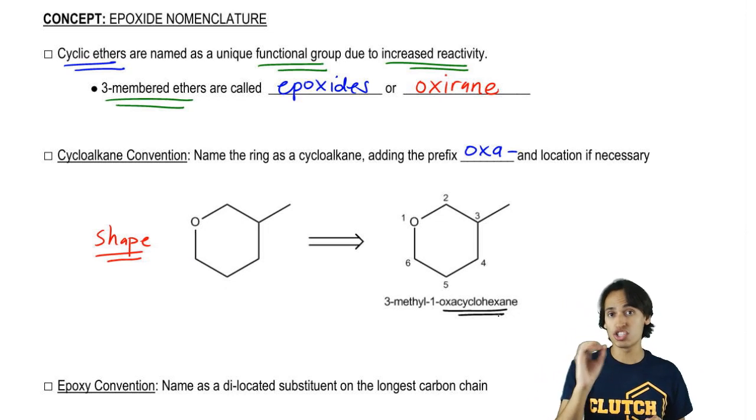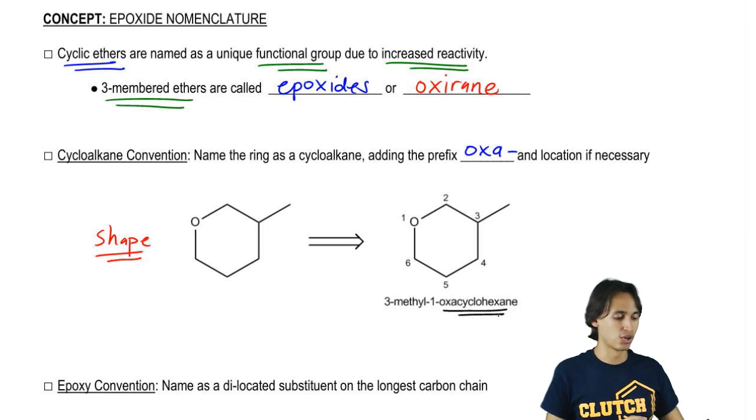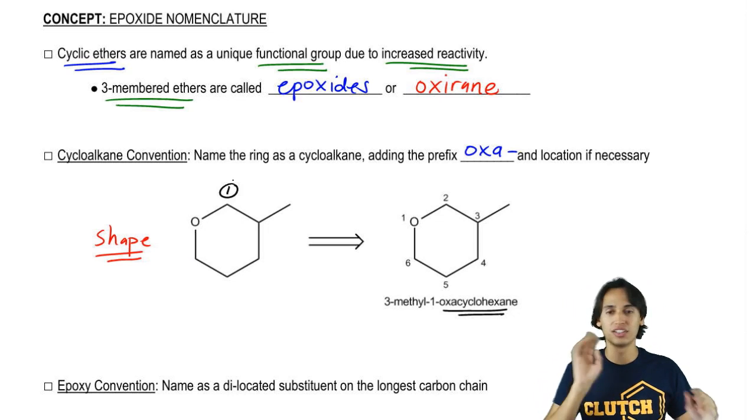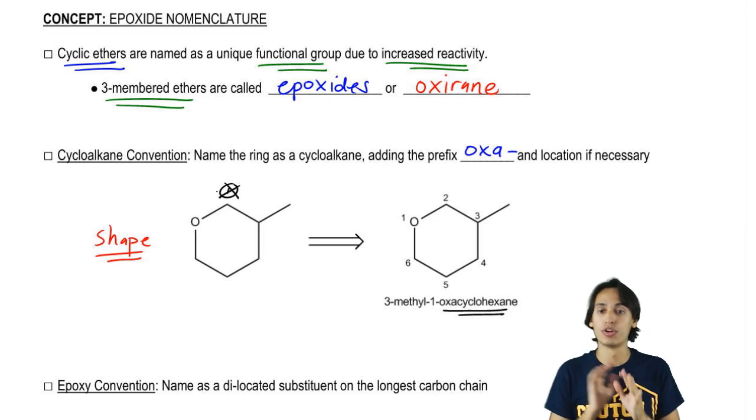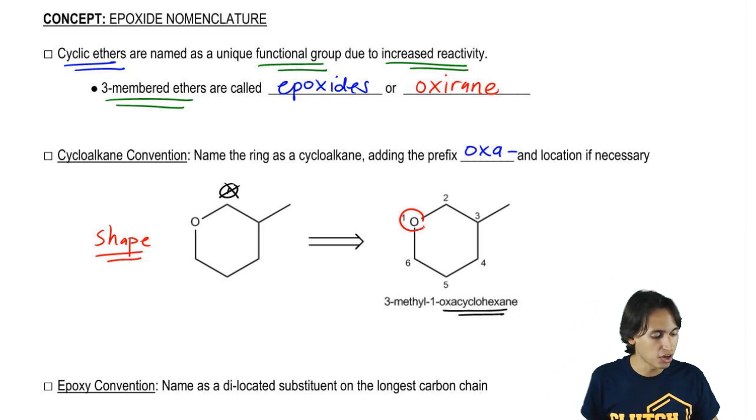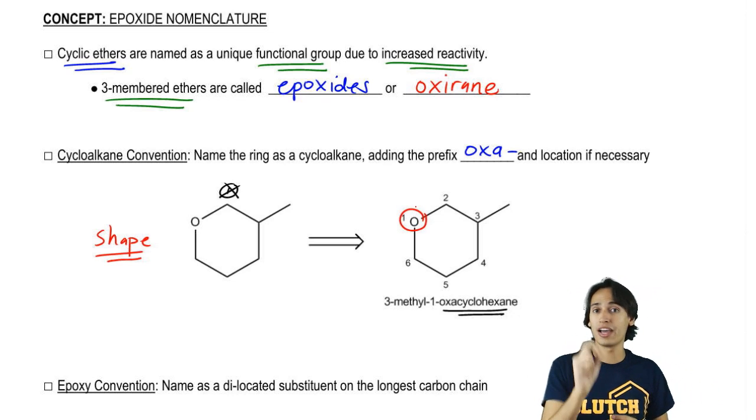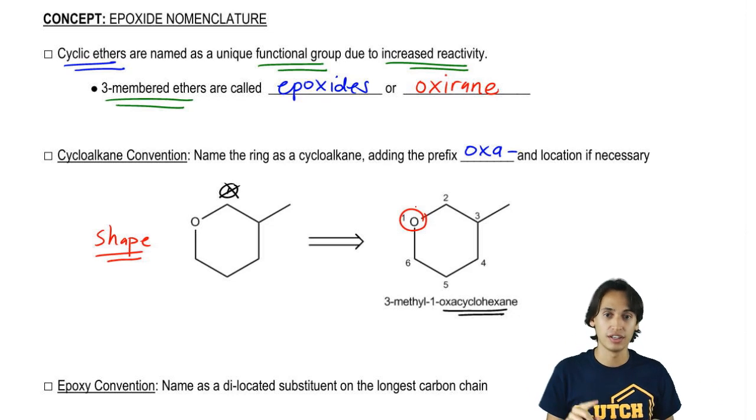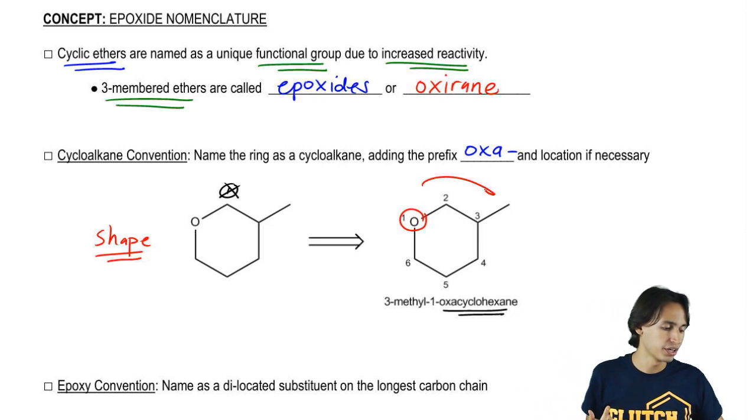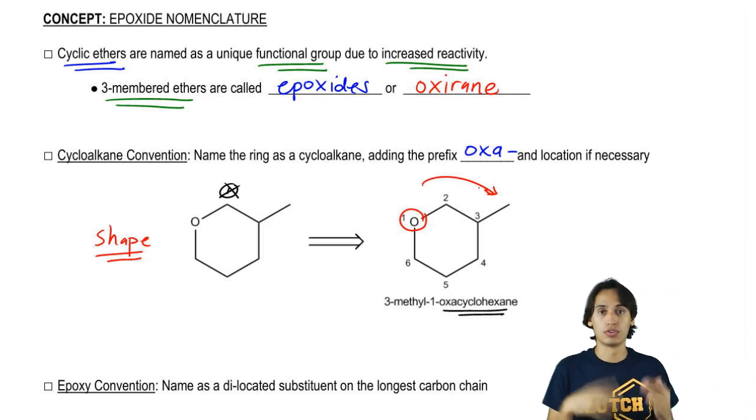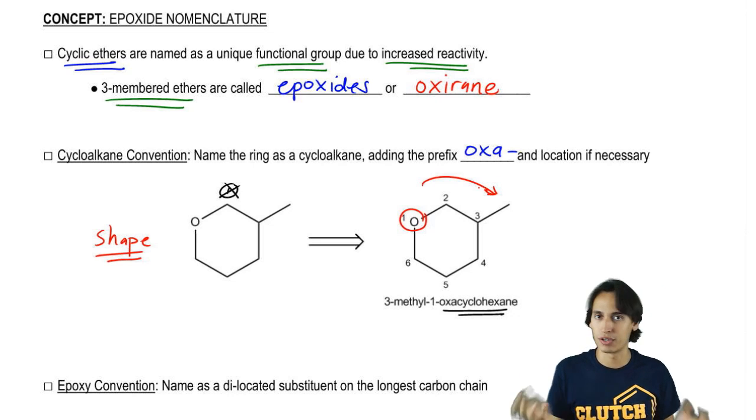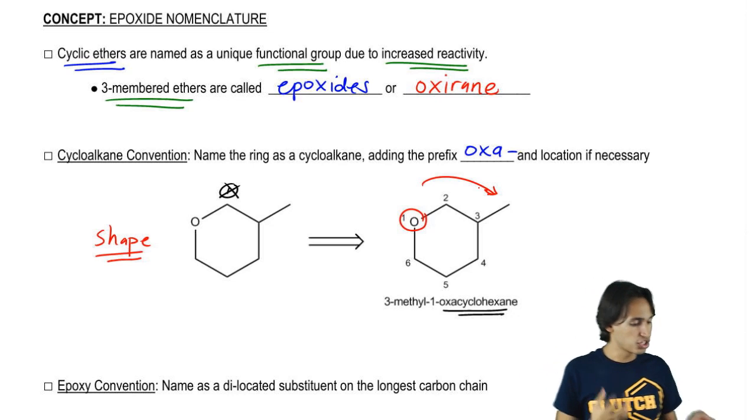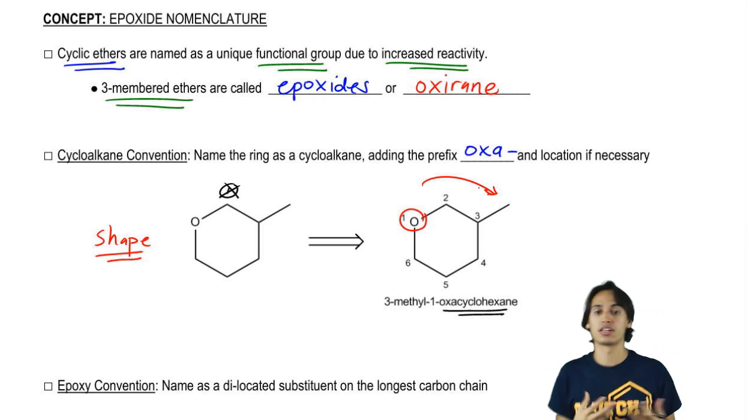So let's go ahead and just talk about this for a second. The root is going to be the oxacyclohexane. Now we just have to talk about locations. It turns out that the oxygen is always going to get your one spot. So when I put the one here, that didn't really count. The way that I should really number it is starting from the oxygen because that's the highest priority atom inside the ring. And then obviously I should number to give the lowest overall number. So this would be 3-methyl-1-oxacyclohexane.